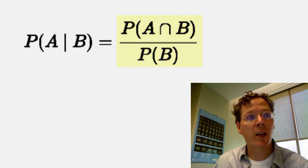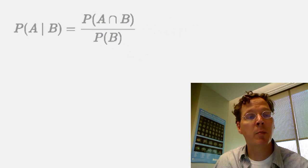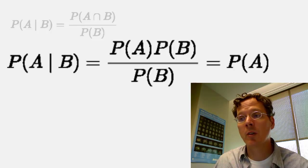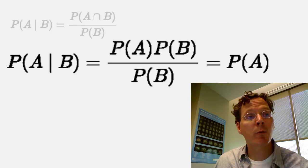And we haven't talked about independence yet, but in the event that A and B are unrelated, or so-called statistically independent, which we'll define later, then the probability of A given B works out to just be the probability of A. So the new information that B has occurred has given you no information about the probability law governing the event A.